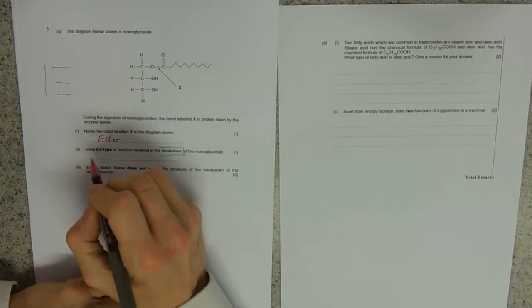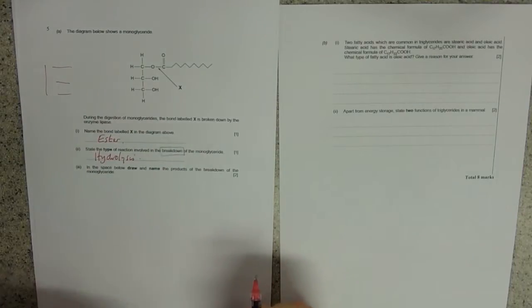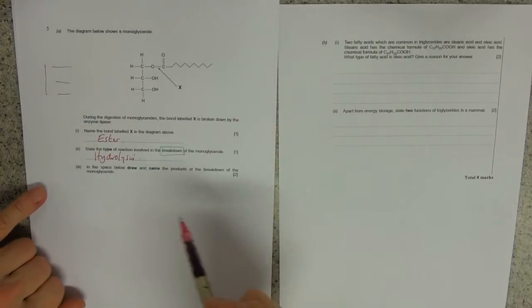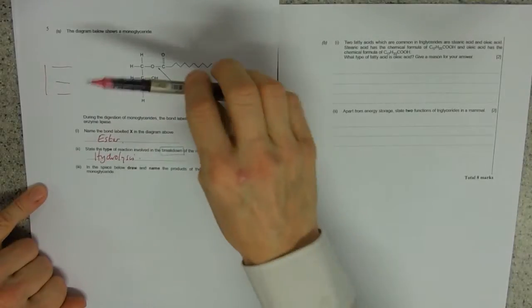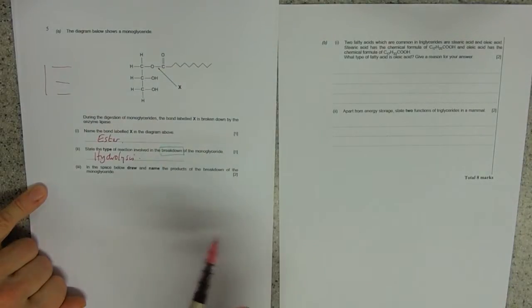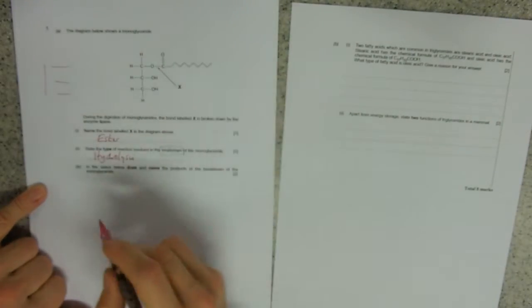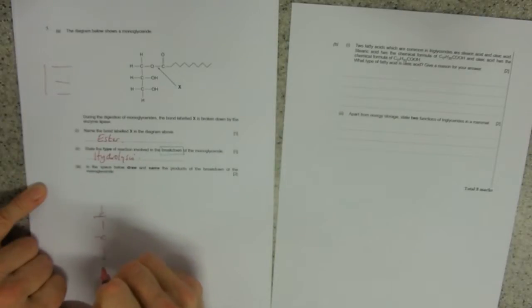In the space below, draw and name the products of the breakdown of the monoglyceride. It's a little bit tricky this. A little tip: if you're ever asked to draw something, use what you've got there as a template and just make the addition, so use the same style. I'm going to draw glycerol first of all. So there's our glycerol. So this is what we've got from the diagram.